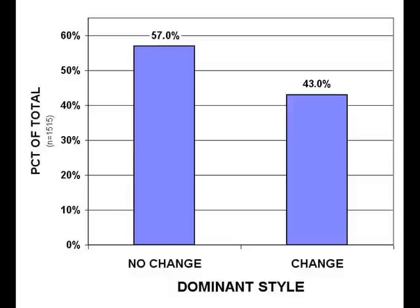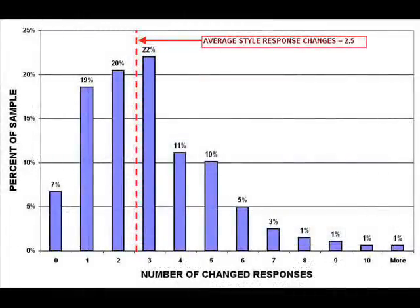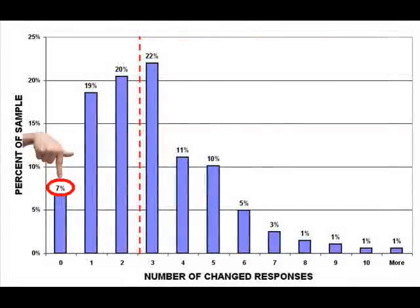Our first order of business is to figure out what the magnitude of the change was — whether it was a lot or a little. Over a 2.7 year span, the average retest results changed by 2.5 responses on the 24-question IOPT survey, about 10%. Not all of these 2.5 changes affected the dominant style — a style may increase or decrease in strength without changing its rank order. But this tells us that things don't change a whole lot in about 3 years. Only 7% of the retest sets did not change at all. Most people did some style shifting, but the magnitude of the change was relatively modest.